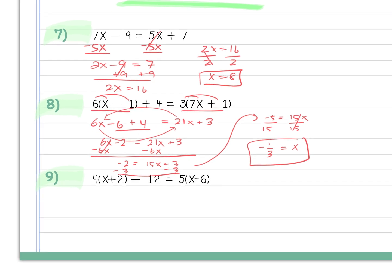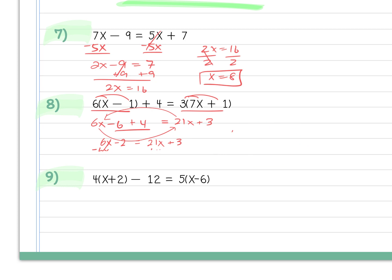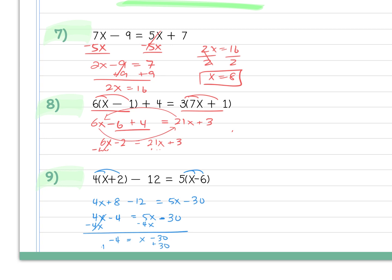On the next problem, we distribute the 4 first: 4x plus 8 minus 12, then distribute the 5 to get 5x minus 30. Simplify the left side by combining like terms. Then subtract 4x from both sides: minus 4 equals x minus 30. Add 30 to both sides to get x equals 26.